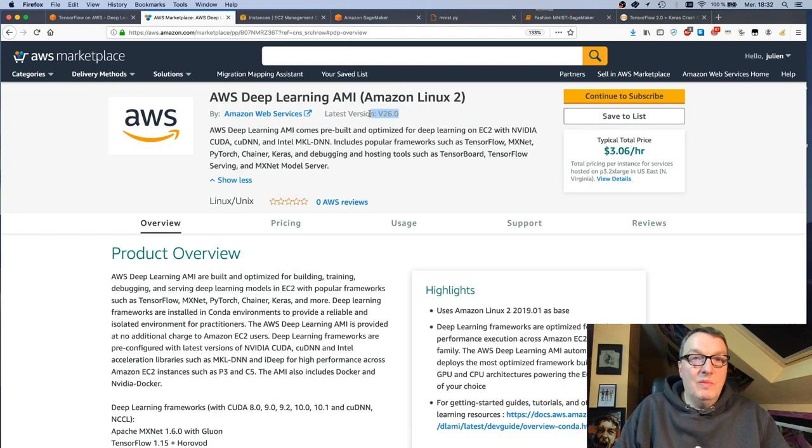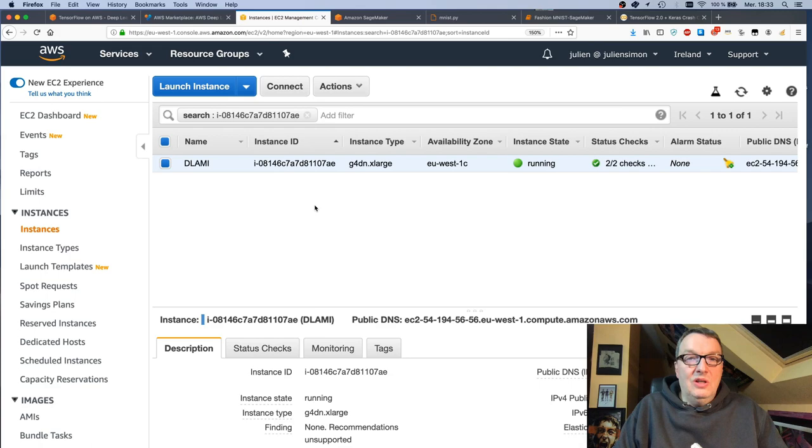At the time of recording, this is the latest version, but don't go and pick something older because you're going to miss TensorFlow 2.0. These are available for Amazon Linux 2 or Ubuntu 18, whatever suits you. You can just select this AMI and launch an instance, which I've already done.